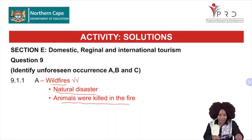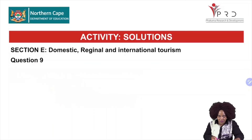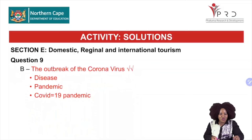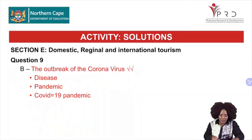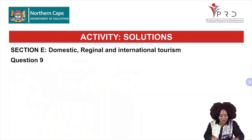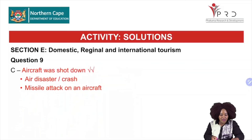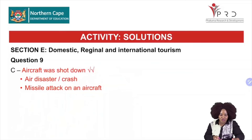The answer for A is wildfires or natural disaster — the picture shows a tree and an animal, representing animals killed in the fire. You identify this from the picture. The answer for B is the outbreak of the coronavirus, the disease, the pandemic, or COVID-19 — any of those will be correct, and those are two marks you cannot afford to lose. The answer for C is the aircraft that was shot down — a disaster, a crash, or a missile attack on an aircraft. That is unforeseen occurrence C, and you also get your two marks there.